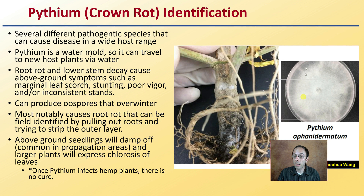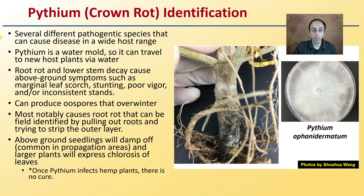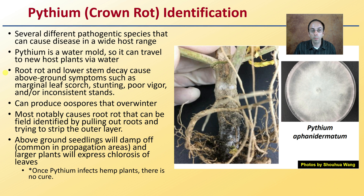Identification is important, and there are several different pathogenic species that can cause disease in a wide host range. Pythium is a water mold, so it can travel to new host plants via water, including irrigation water. Root rots and lower stem decay cause above-ground symptoms such as marginal leaf scorch, stunting, poor plant vigor, and inconsistent stands if you're looking down a long row.